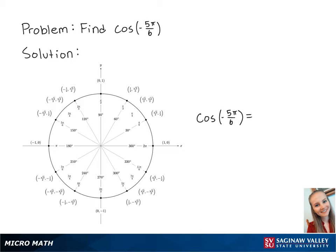For this problem, we're going to find cosine of negative 5 pi over 6. Since this number is negative, we're going to start at 0 and travel backward a distance of 5 pi over 6.